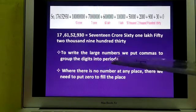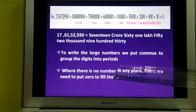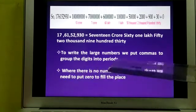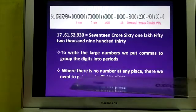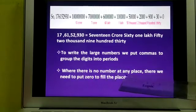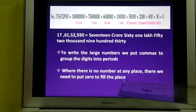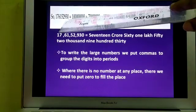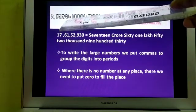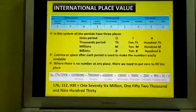Important things to remember: to write large numbers, we put commas to group the digits into periods - putting commas is a must. Where there is no number at any place, we need to put zero to fill the place. Here you see in the ones place no number is there, so we write zero.